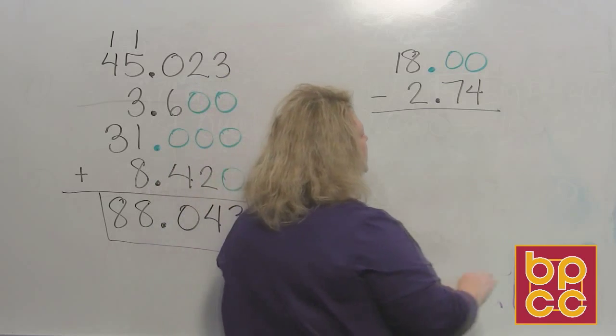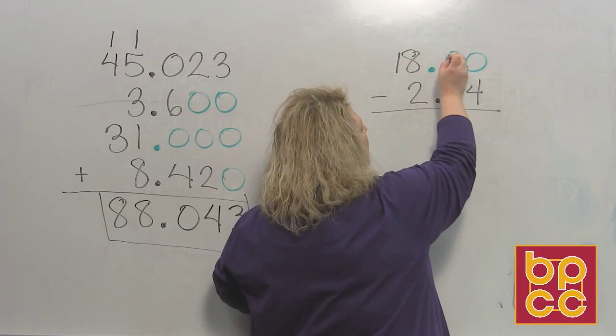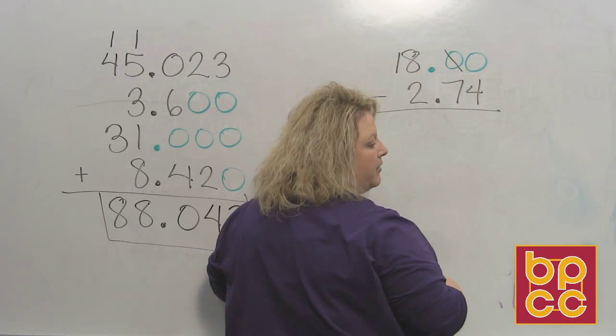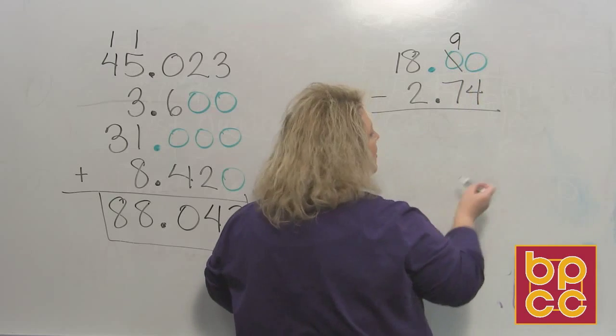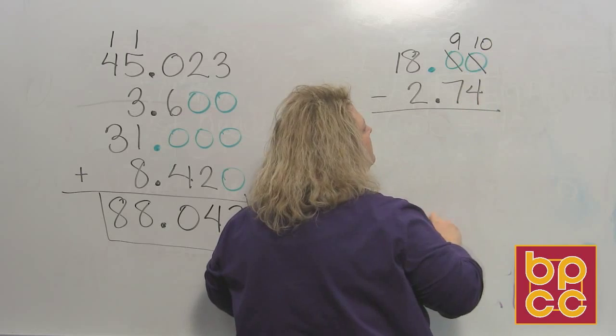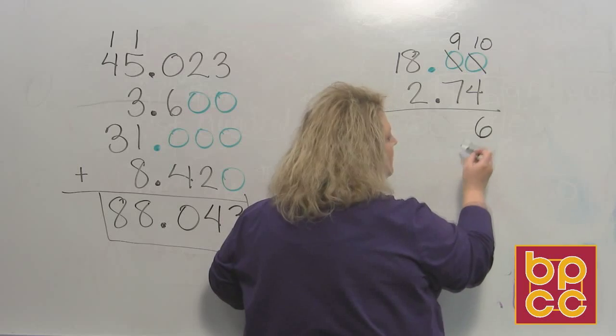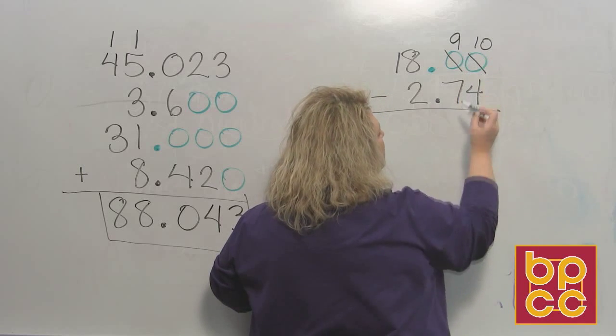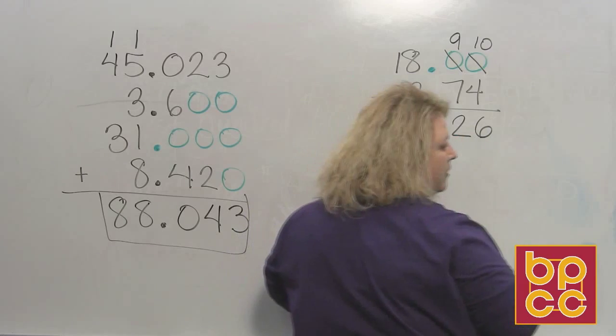So once we do that, I can't take four from zero. So I have to go borrow one from here. That was ten. And when I borrow from him, he becomes a nine. Which means this zero becomes a ten. So that ten minus that four gives me six. That nine minus that seven gives me a two.